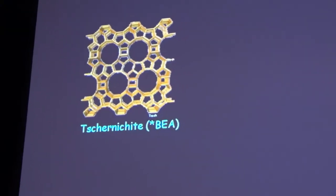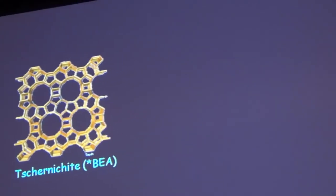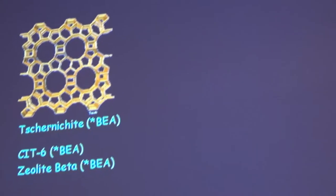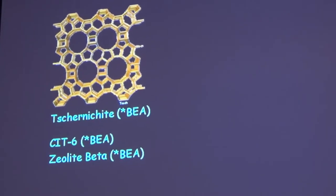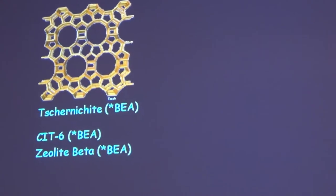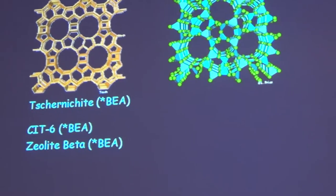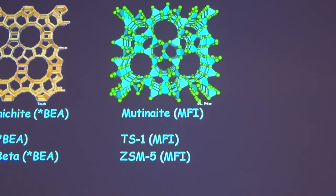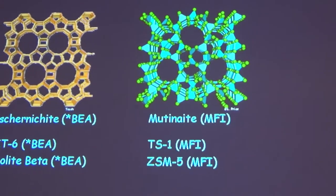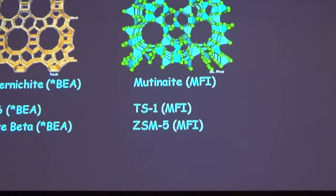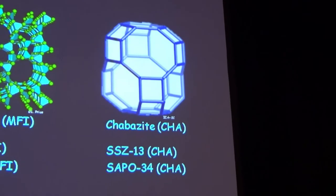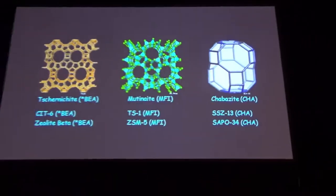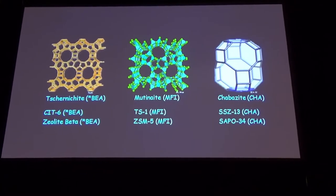The Chabazite has a BEA structure, which is a large-pore zeolite with 12 oxygen atoms in the ring. It has synthetic structural analogs: CIT-6 and zeolite beta, which is the more important commercial one. The Mordenite has an MFI structure, and we are more familiar with ZSM-5, or even better ZSM-5, which is widely used commercially. For the Chabazite structure, SSZ-13 and SAPO-34 are commercially used analogs.